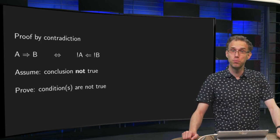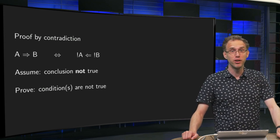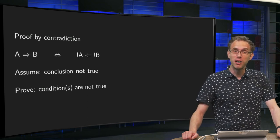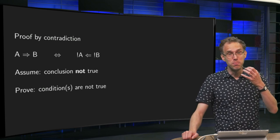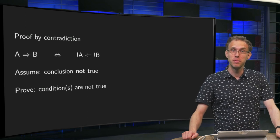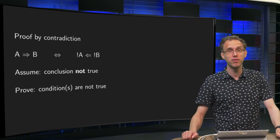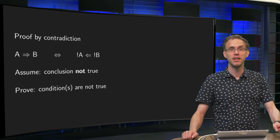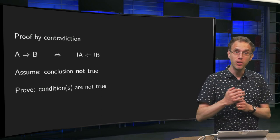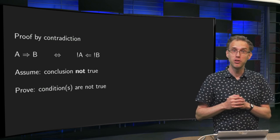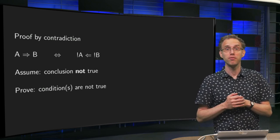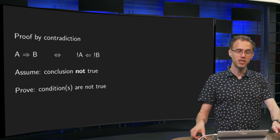A useful technique to prove that a theorem is true is a so-called proof by contradiction. You basically convert your original theorem into another equivalent one that is easier to prove. How does that work? You will learn this in this video and we will also immediately apply this method to an example from linear algebra. So what's the idea?